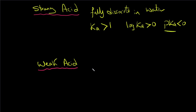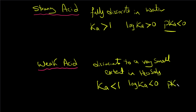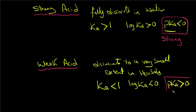For a weak acid, which dissociates to a very small extent in water, Ka will be less than one, so log Ka is less than zero and pKa will be greater than zero. A very small or negative pKa means a strong acid; a pKa much greater than zero means a weak acid.